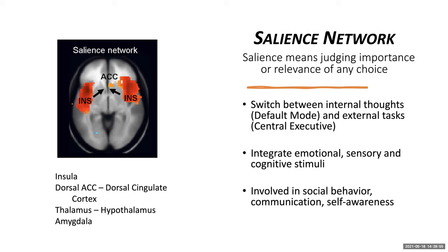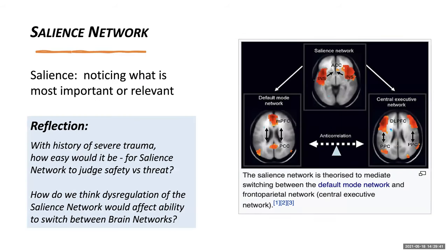Salience means judging importance or relevance of any choice. It was named this by scientists in the past 10 years because they noticed that when the brain is switching from default mode to executive mode, it goes through a medium stage which they named the salience network. The salience network allows us to integrate emotional, sensory, and cognitive stimuli, and it's involved in social behavior, communication, and self-awareness. In the diagram on the right, we see the default mode network on the left, the executive network on the right, and the salience network in between, which mediates switching back and forth.